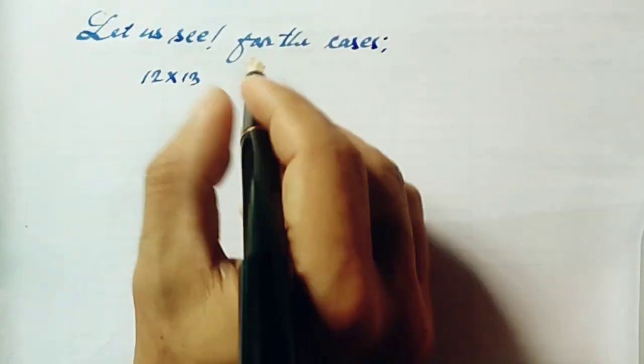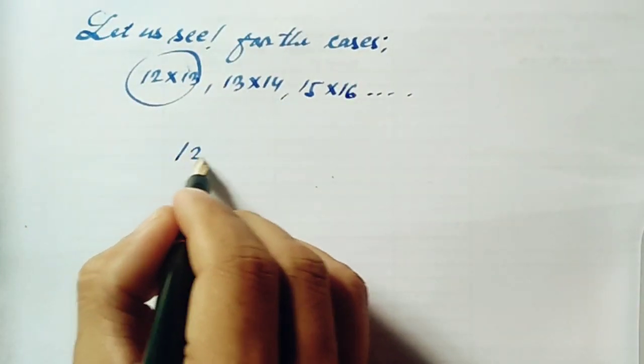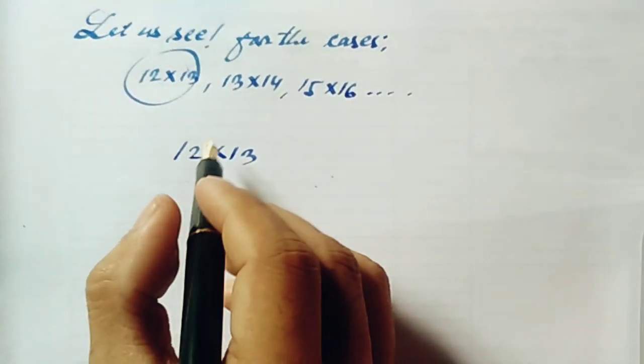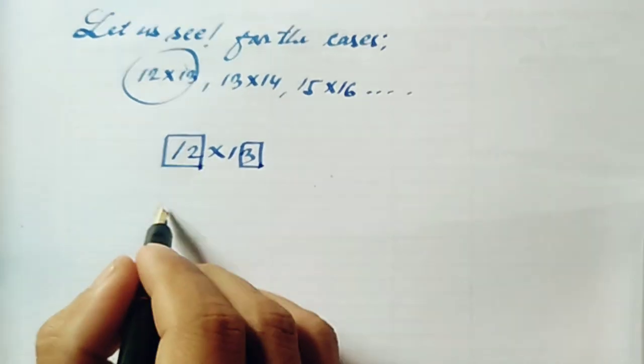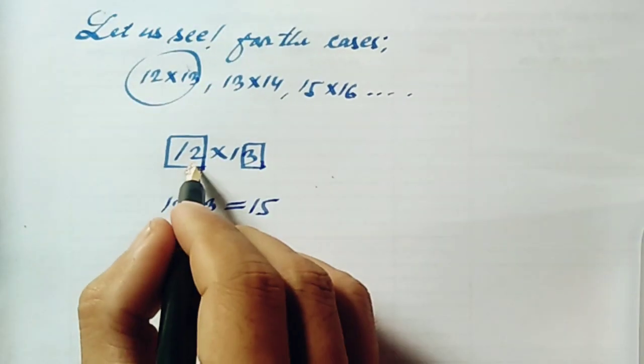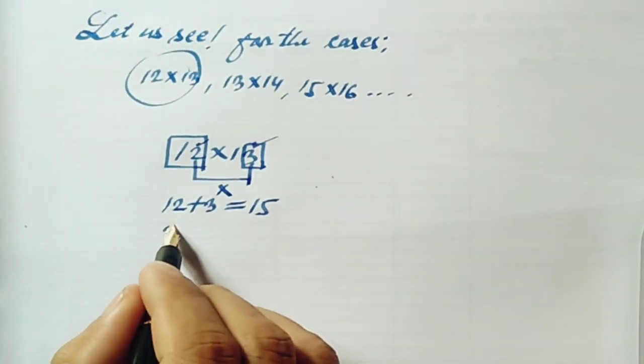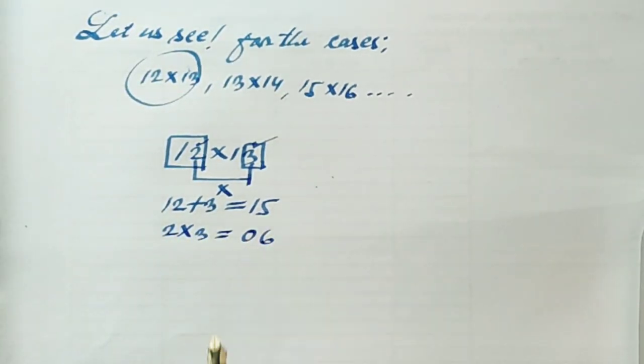Now let us see the calculation of 12 into 13. Firstly, you have to add this 12 and 3 together, that is 12 plus 3 equals 15. In the second step, we need to take this 2 and 3, we have to multiply it. You'll get 2 into 3 equals 6, but we have to write 06.